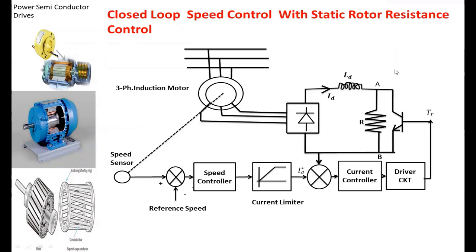Now we are going to see the closed loop control of the static rotor resistance. Here the same circuit is taken. This is the three-phase supply given to the stator of the induction motor. This is the rotor. The rotor power is converted into DC power by means of a diode rectifier circuit, and that is given to the external resistance. Across the external resistance we connect a BJT. The gate pulse for the BJT is used to control how much resistance is added into the rotor circuit. This choke reactance is placed to maintain a smooth DC link current.